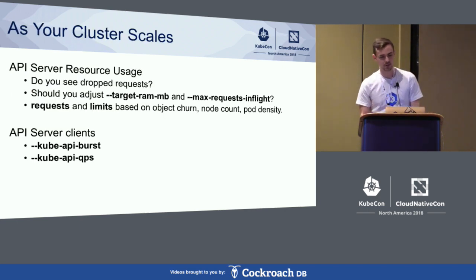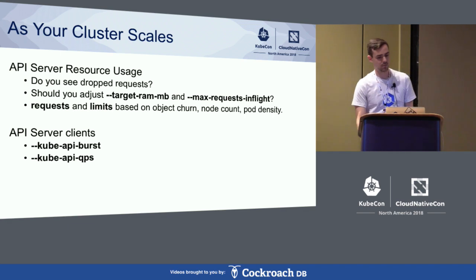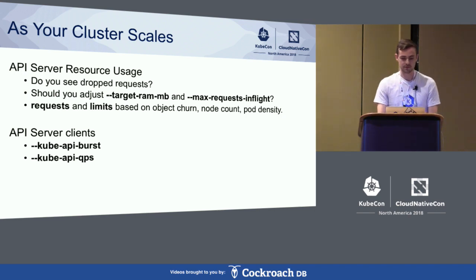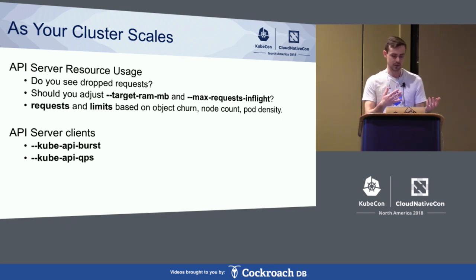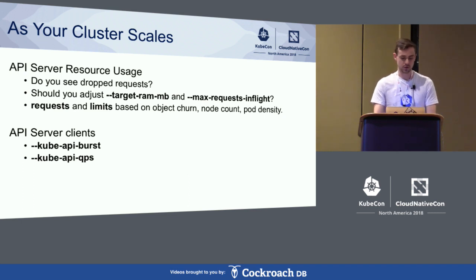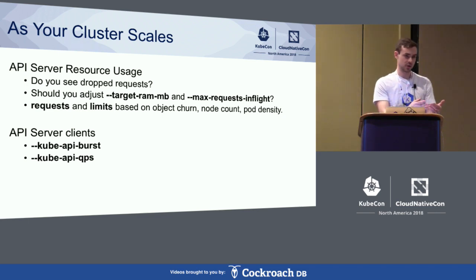As you start to scale up your cluster, the first thing to be cognizant of is your API server starting to consume more and more CPU and memory. Watch for dropped requests, which manifest as 429s. You can actually adjust the number of requests the API server can handle simultaneously with the max-requests-inflight flag. But be cognizant that as you do that it will take more resources, so you have to adjust your requests and limits as your node count goes up, pod density increases, and object churn increases. To reduce load on the API server you can reduce how much your API server clients call it, but as you scale up you probably won't be able to do that — you'll actually have to go the opposite direction and allow them to do more work.